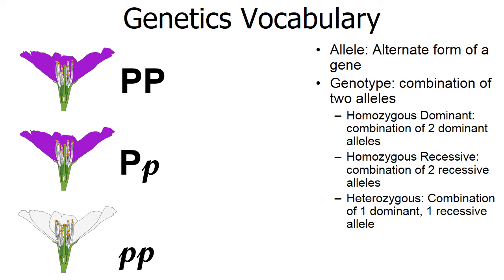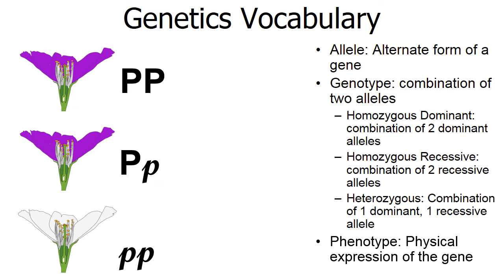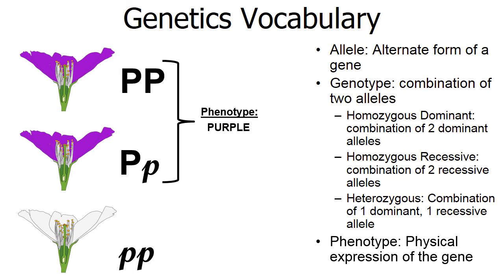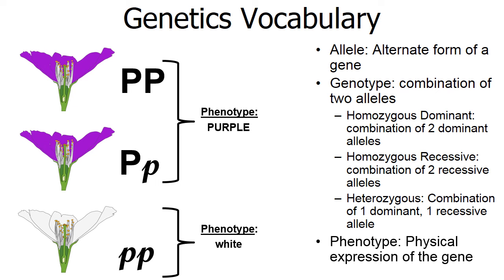Another vocabulary word is phenotype — the physical expression of a gene. Notice how two of the three genotype options result in purple color. All it takes is one dominant allele to show the color purple, because purple is dominant and white is recessive. The phenotype for homozygous recessive (lowercase p, lowercase p) would be white. The phenotype is what is physically expressed — in this case, purple flowers and white flowers.